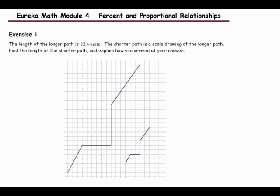Exercise 1: The length of the longer path is 32.4 units. The shorter path is the scale drawing. Find the length of the shorter path and explain how you arrived at your answer. To recap: label which is the original and which is the scale drawing, then measure the vertical or horizontal segment for each, calculate your scale factor, and multiply it by the length of the longer path. Pause the video and complete the exercise. Resume when you're ready to check your answer.